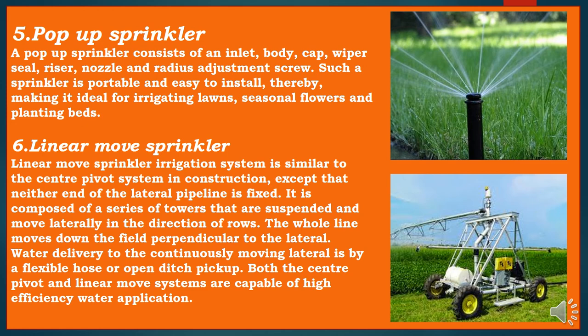The sixth type of sprinkler irrigation is linear move sprinkler. A linear move sprinkler irrigation system is similar to the center pivot system in construction, except that neither end of the lateral pipeline is fixed. It is composed of a series of towers that move laterally in the direction of rows, with the whole line moving down the field perpendicular to the lateral. Water delivery to the continuously moving lateral is by a flexible hose or open ditch pickup. Both the center pivot and linear move systems are capable of high-efficiency water application.